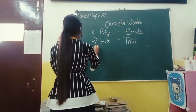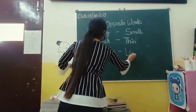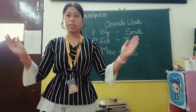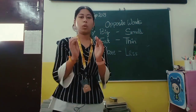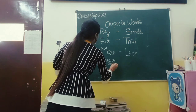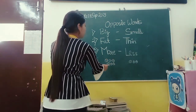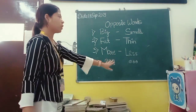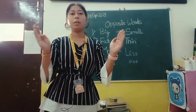Now the next word which we are going to learn is 'more' and 'less'. What is the meaning of more? More means zyada. And less means thoda. For example, when we count these balls, these are one, two, three, four, five and six — six balls. And when we count these balls, these are one, two, three balls. So which one is more? These are more and these are less. More means zyada and less means thoda.